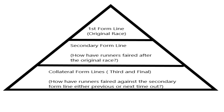I use a pyramid-based scheme, as you can see in front of you now. The first form line is at the top — that is the race you've just looked at to see whether that form is going to work out. The secondary form line is next in the pyramid, and this is about how horses in behind that winner have fared — how have they gone on next time? You need to keep that as close to the principles of that first form line race as you can, in terms of trip, ground, and track.